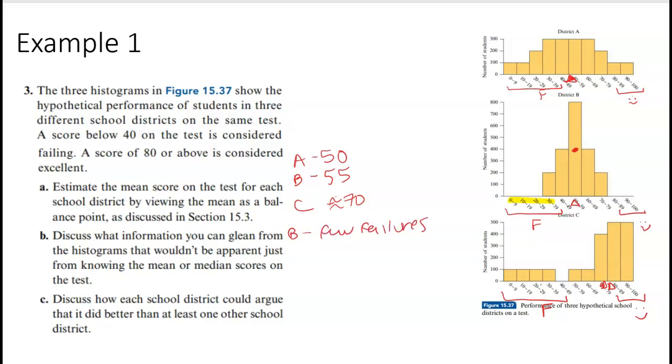And then for C, I could see that we have a lot, like kind of more fails, right? We've got like a lot of failures, but we also have a lot of excellence. So I can see that from the distribution, not from the mean. The mean doesn't really tell me that.